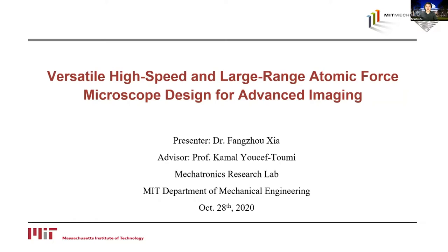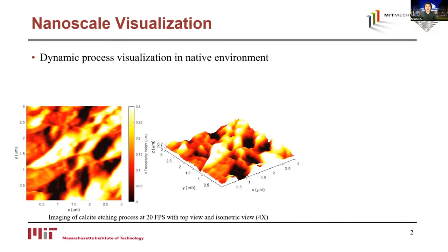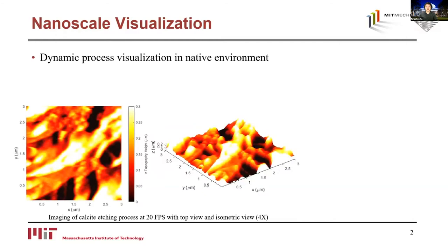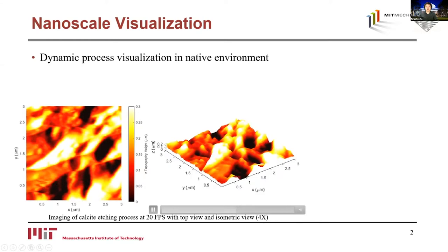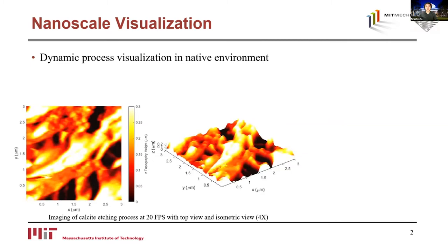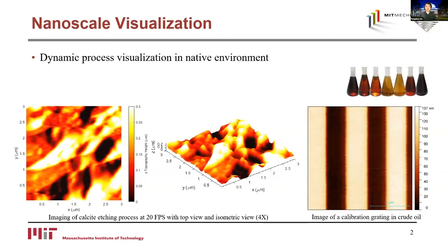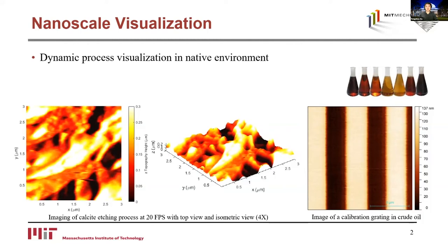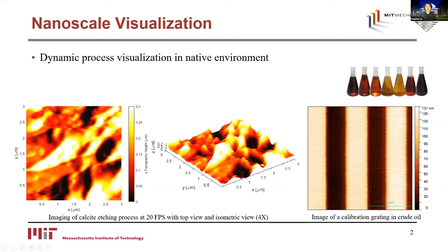Microscopy instrument development is important to enable new imaging capabilities for nanoscale phenomena. What you are seeing on the screen now is a real-time video of a calcite etching process, visualized using the atomic force microscope developed in our group. We can see the deepening of pits on the surface as calcite material is etched away by sulfuric acid. With high-speed imaging, dynamic processes can be visualized to improve fundamental understanding of microscopic interactions. As another example, an AFM image of a calibration grating is taken in opaque crude oil — impossible for conventional AFM systems with optical deflection sensing. This allows observation of samples in their native opaque environments. I'll explain how these two capabilities are enabled through custom instrumentation development.